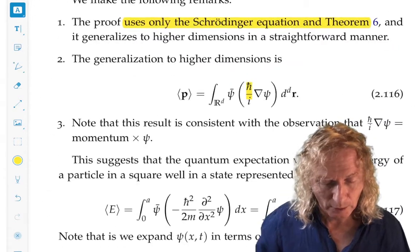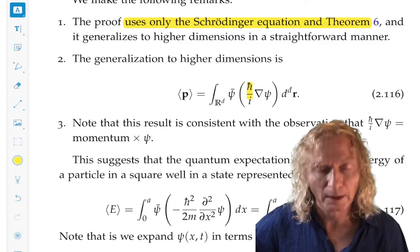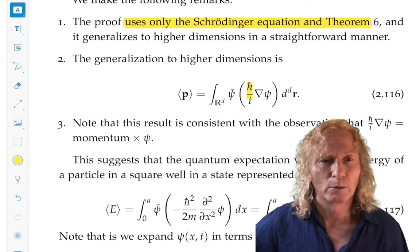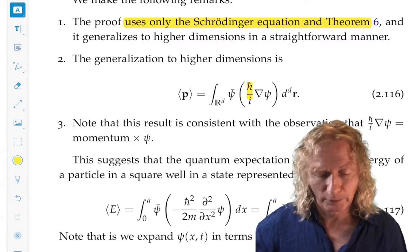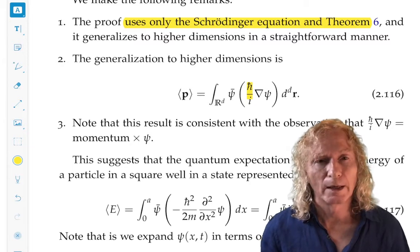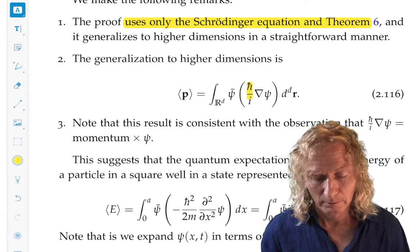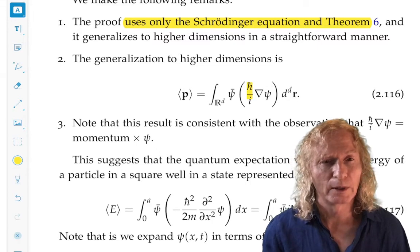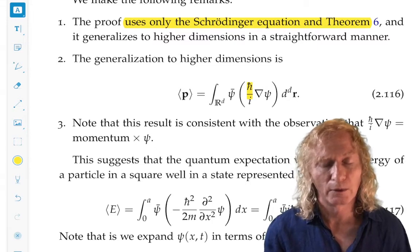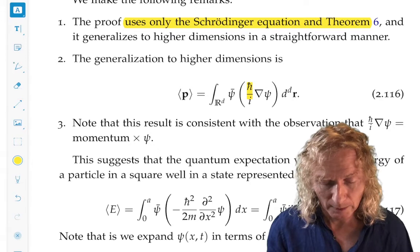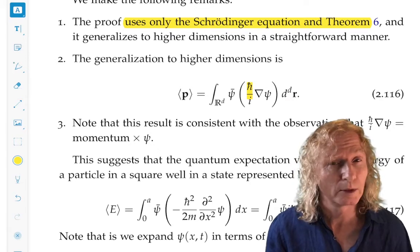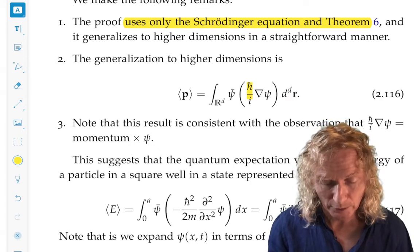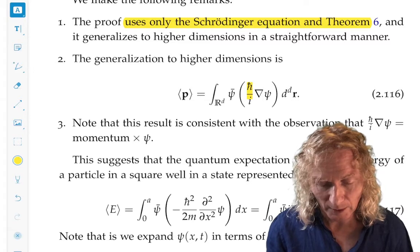Now, we can generalize this result to higher dimensions and more general settings. If we're in d dimensions and we have a state psi of x and t representing the system, then the expectation value of momentum in that situation is the same form.